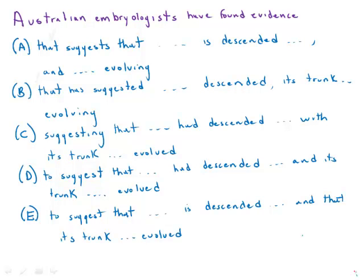In this one about the elephant, the first thing I'll point out is that we have a split at the beginning. Normally a split at the beginning would allow us to eliminate some answers, but here it doesn't — because 'evidence that suggests,' 'evidence suggesting,' and 'evidence to suggest' are all correct, so we can't eliminate anything on the basis of that split.